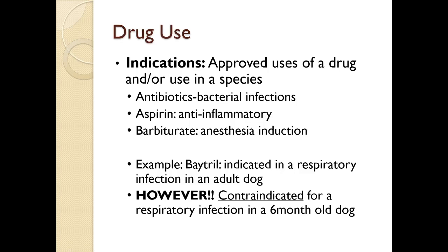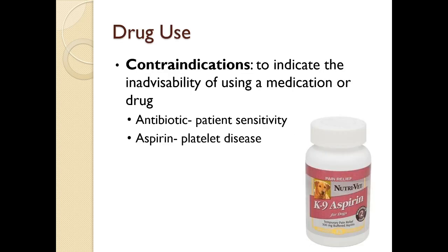Indications are the approved, studied, and tested uses of a drug for specific species — for example, antibiotics for bacterial infections, aspirin as anti-inflammatory, barbiturates for anesthesia induction. Baytril, for instance, is indicated for respiratory infection in adult dogs but is contraindicated in a six-month-old dog because it will close growth plates early in animals whose growth plates are not completely ossified.